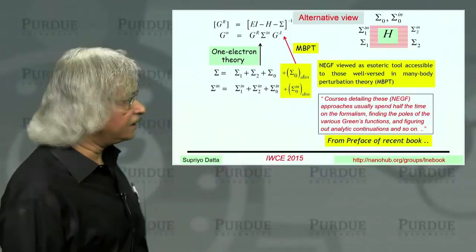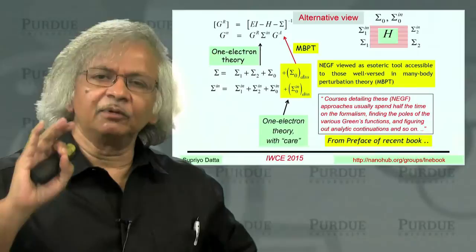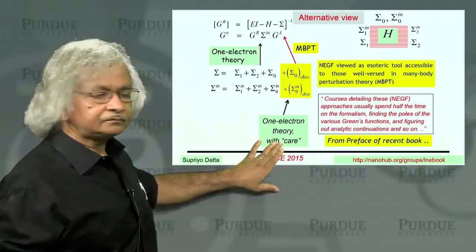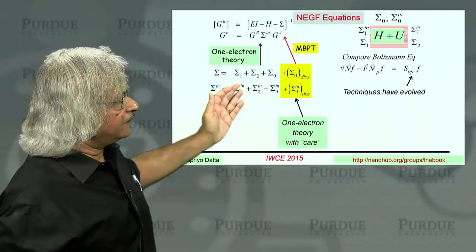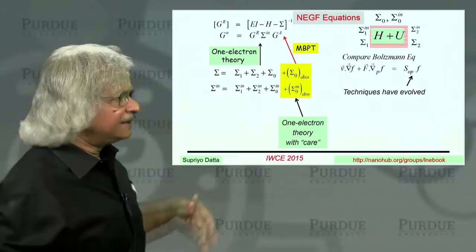But you could do that. And in general, I would say the viewpoint I would recommend is that these are the NEGF equations which you could get from one-electron theory. And then what method you use for calculating the sigmas, that depends on the problem at hand.